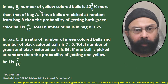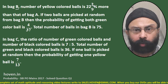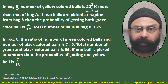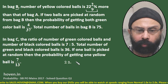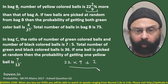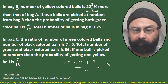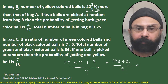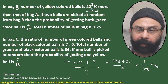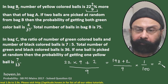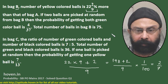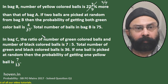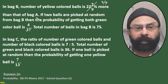In bag B, the number of yellow colored balls is 22 2/9 percent more than that of bag A. Let us solve this figure: 22 2/9 percent = (22×9 + 2)/9 = 200/9, and with percent bringing 100 down, this simplifies to 2/9. So the number of yellow balls in bag B is 2/9 more than bag A.